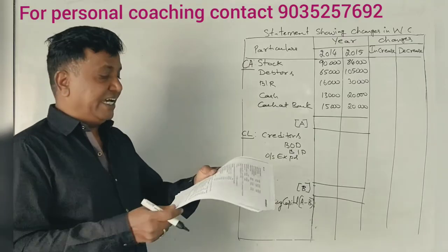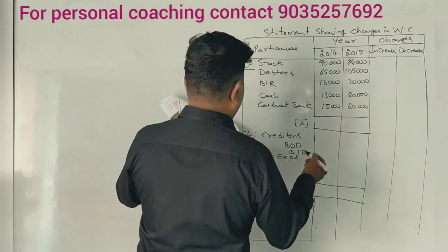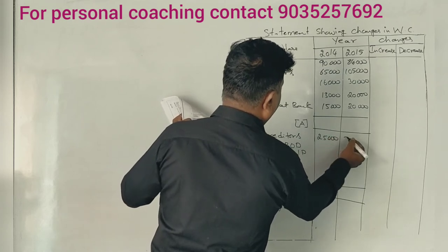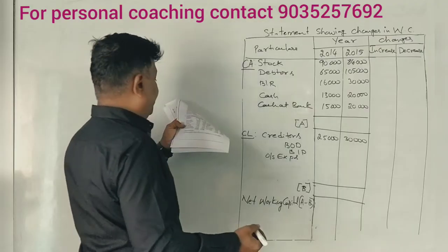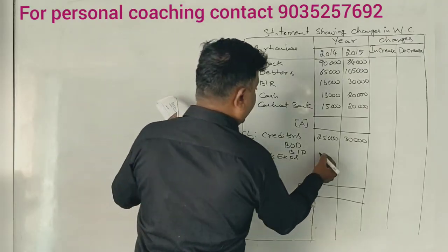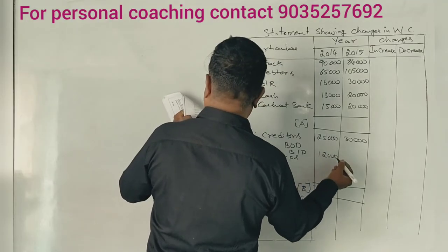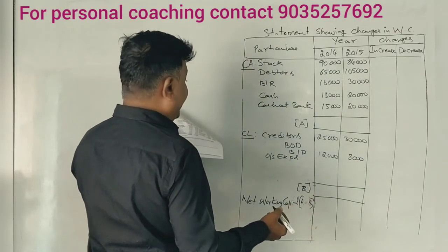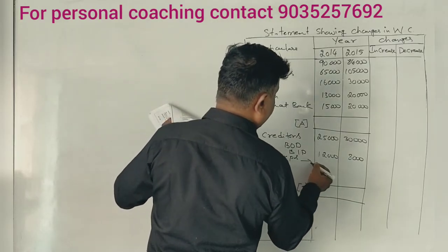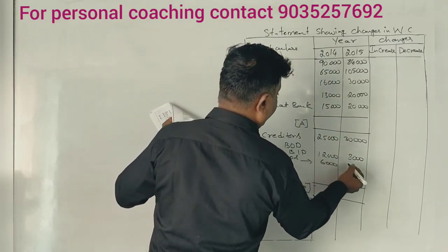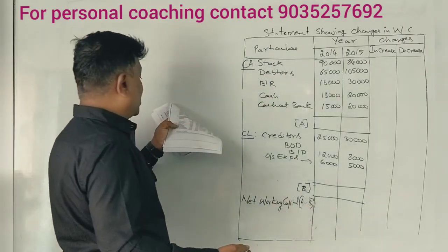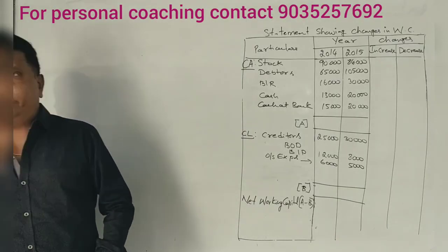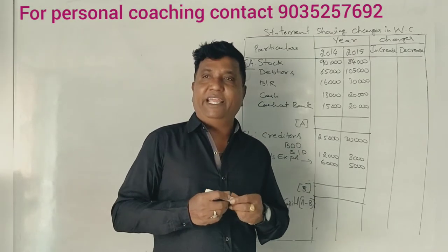On the current liabilities side: creditors 25,000 and 30,000. Bills payable: 12,000 and 8,000. Outstanding expenses: 6,000 and 5,000. Bank overdraft, proposed dividend, and provision for taxation are treated as non-current liabilities.